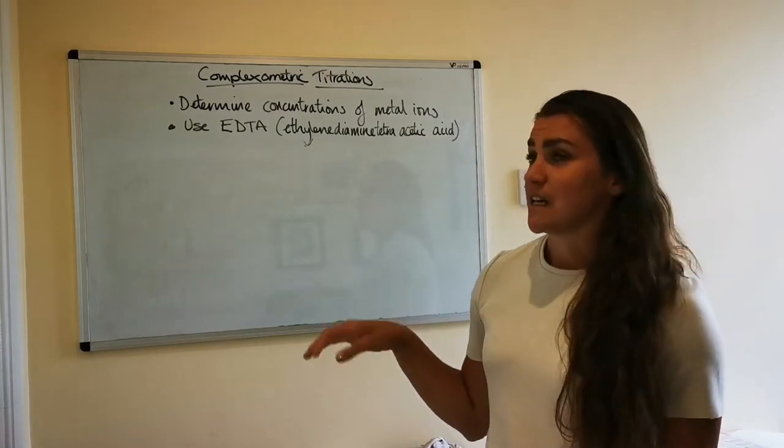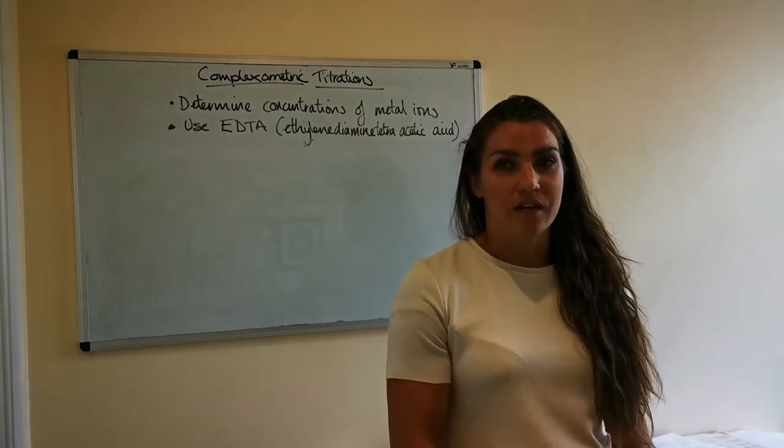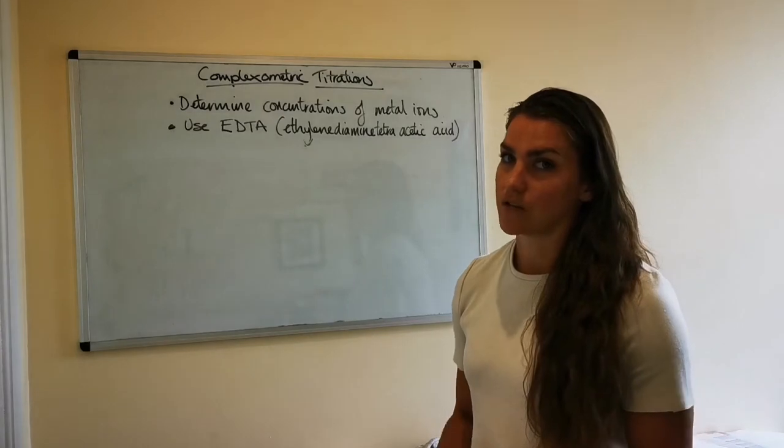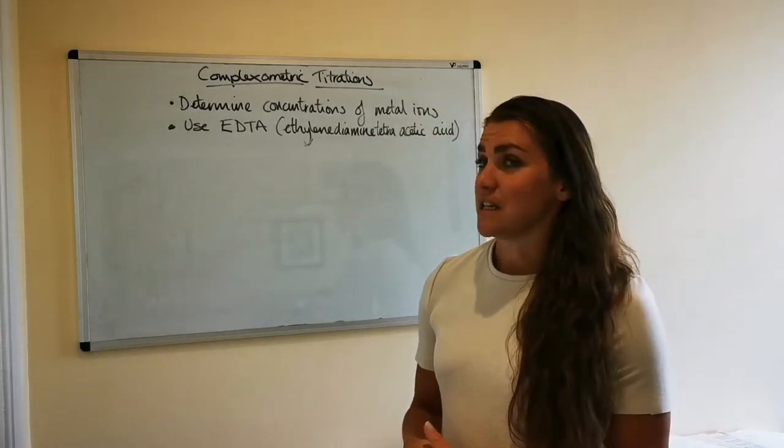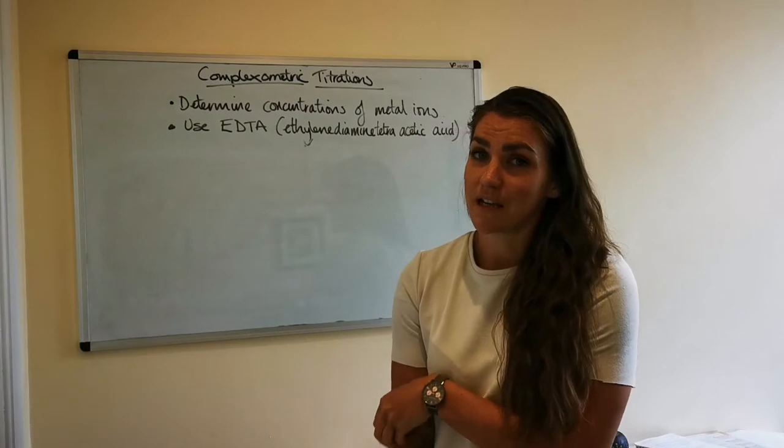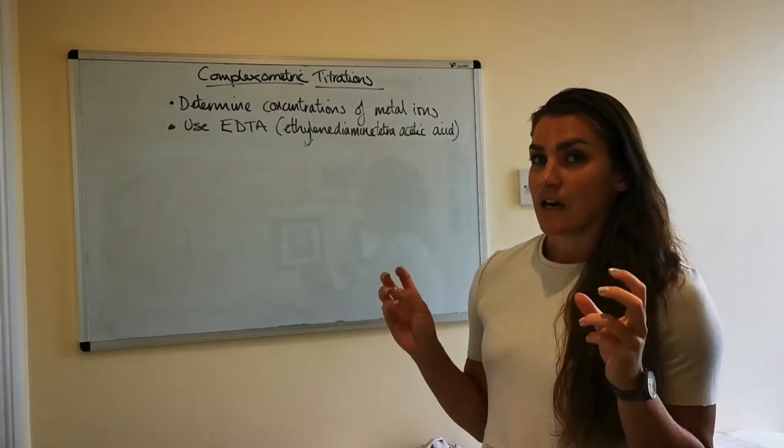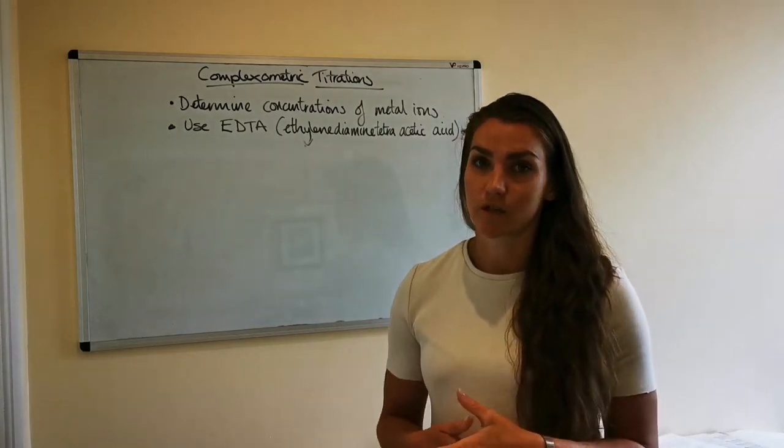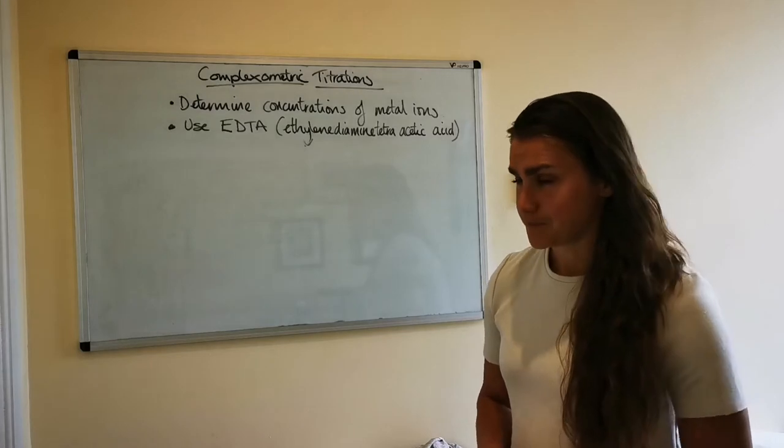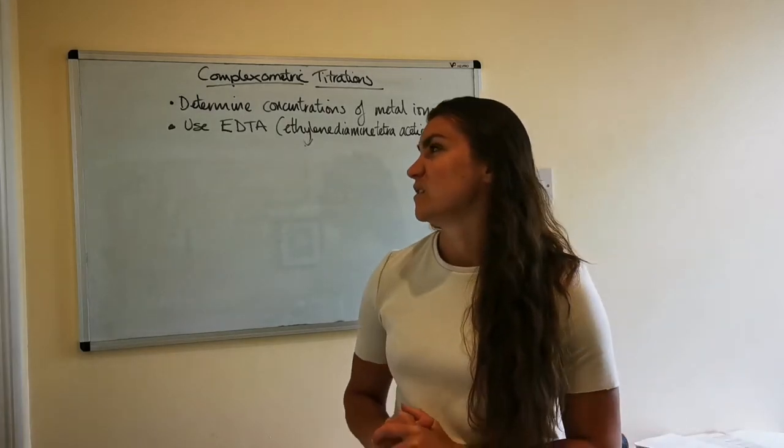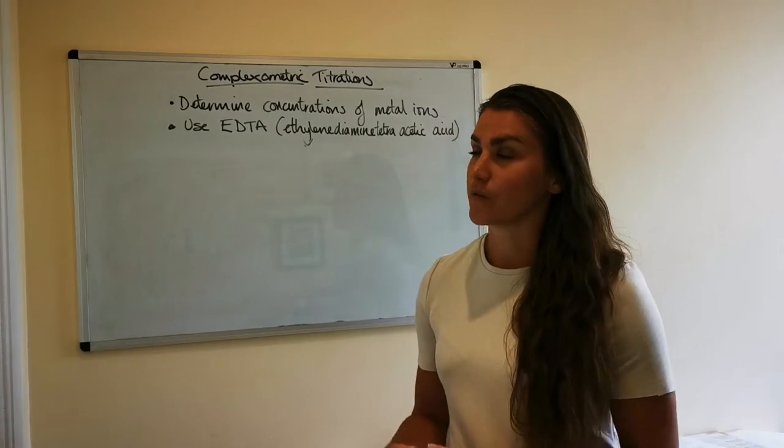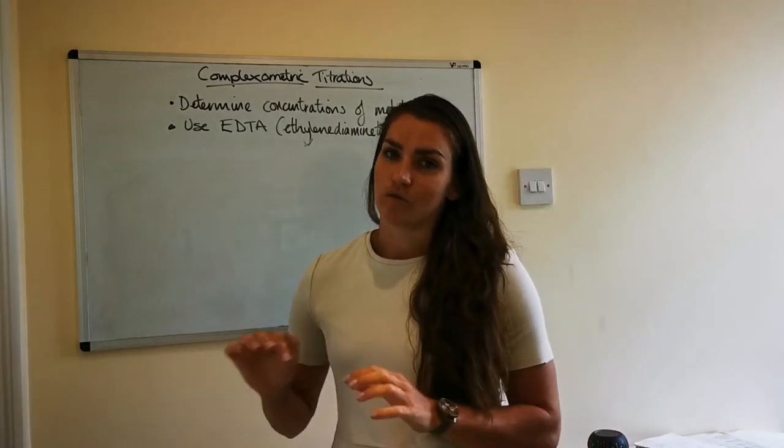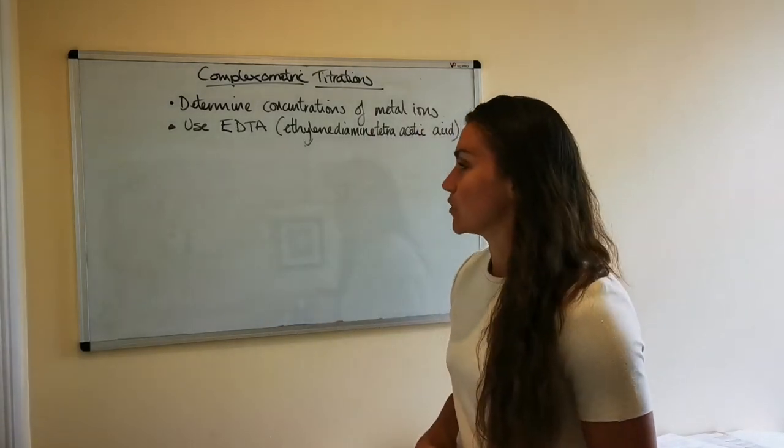EDTA is - if you've done the inorganic unit already you'll have done a bit on inorganic metal ion complexes - but basically EDTA is what's referred to as a hexadentate ligand. So it's a non-metal molecule that has the potential to form six bonds with a metal ion. If you've done the inorganic unit already that stuff will be familiar to you, but if you haven't then that'll all be a bit new. Basically it just means it can form six bonds.